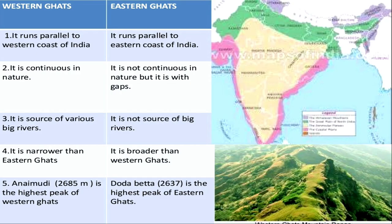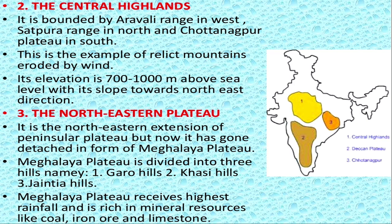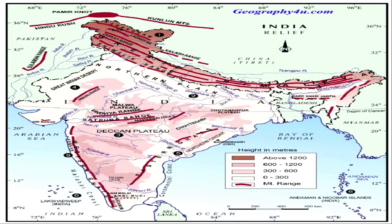The North Eastern Plateau is an extension of the Peninsular Plateau. The Meghalaya Plateau is divided into Garo Hills, Khasi Hills, and Jaintia Hills. The Central Highlands are bordered by Aravalli Range, Satpura Range in the north, and Chota Nagpur Plateau in the south. This is an example of a relict mountain eroded by wind. Its elevation is 700 to 1000 meters above sea level, with its slope towards the northeast. The Vindhyan Range, Malwa Plateau, and Satpura Range are all part of this southern region.